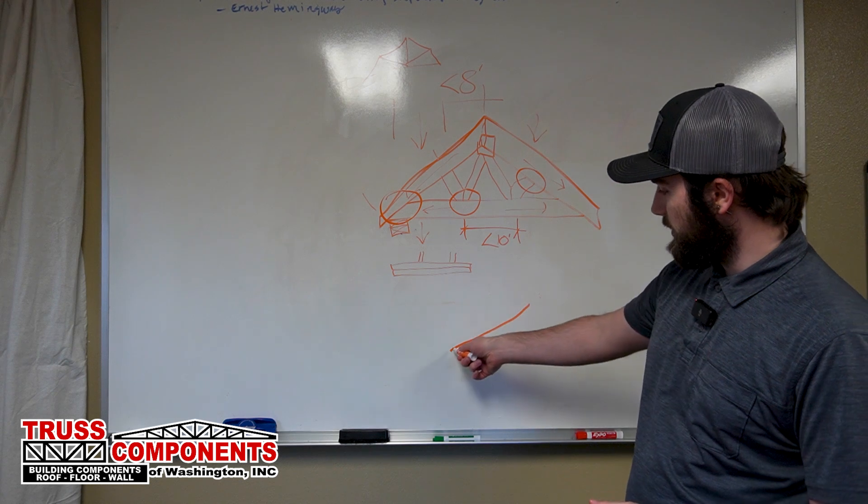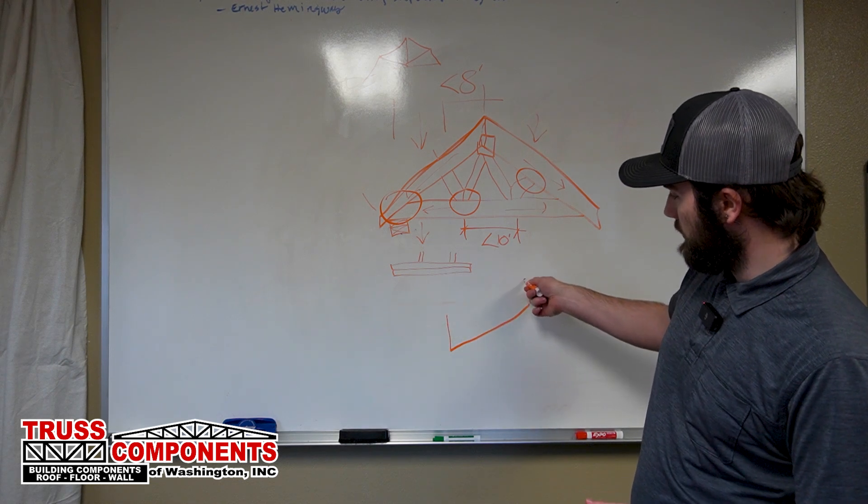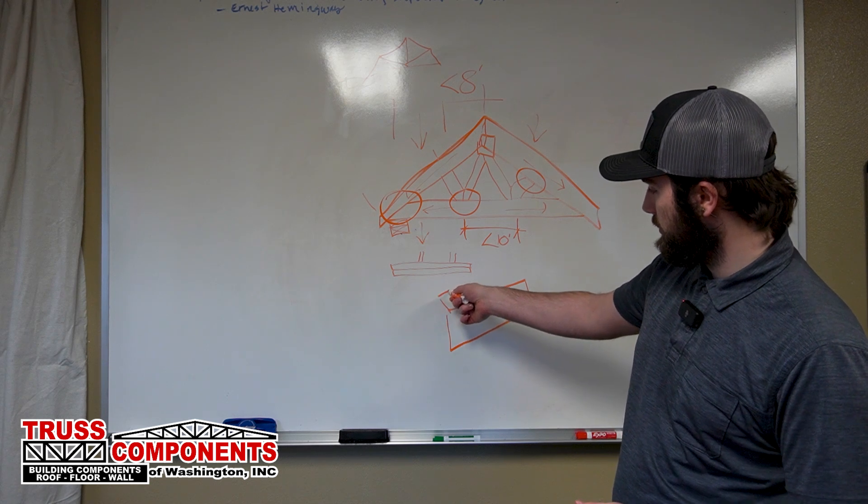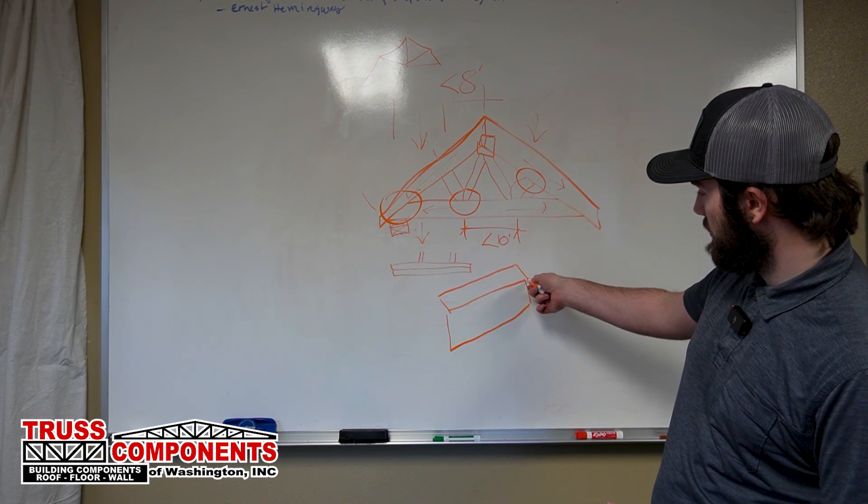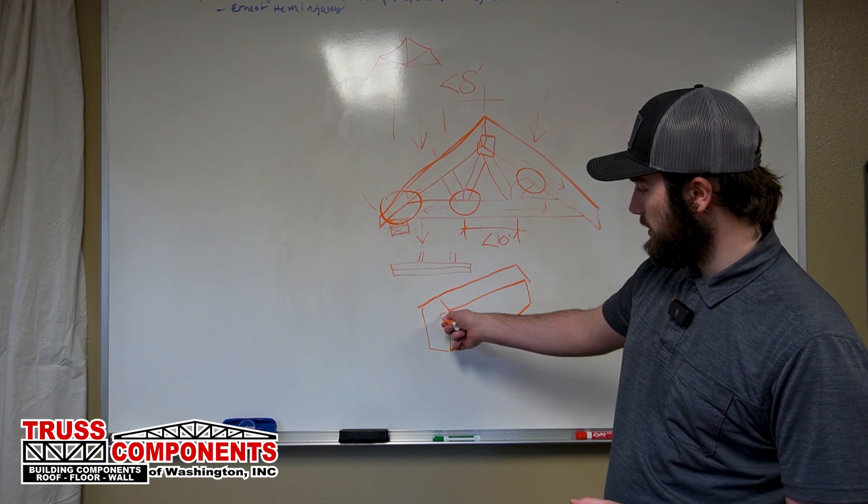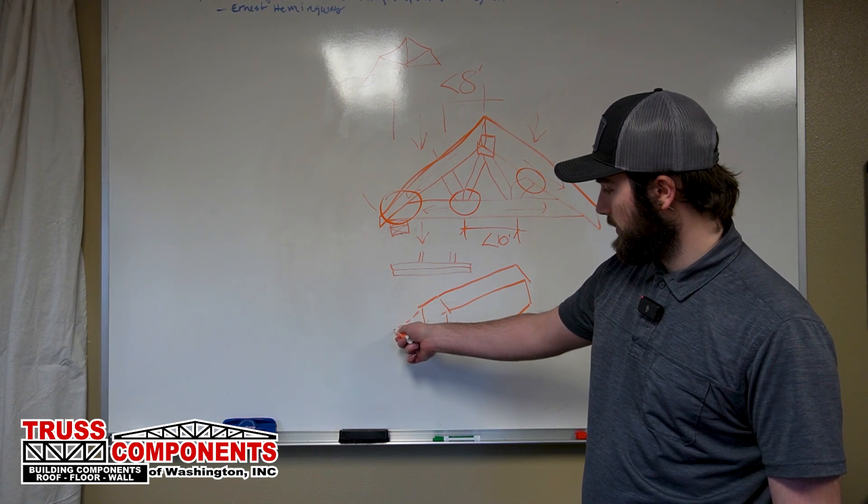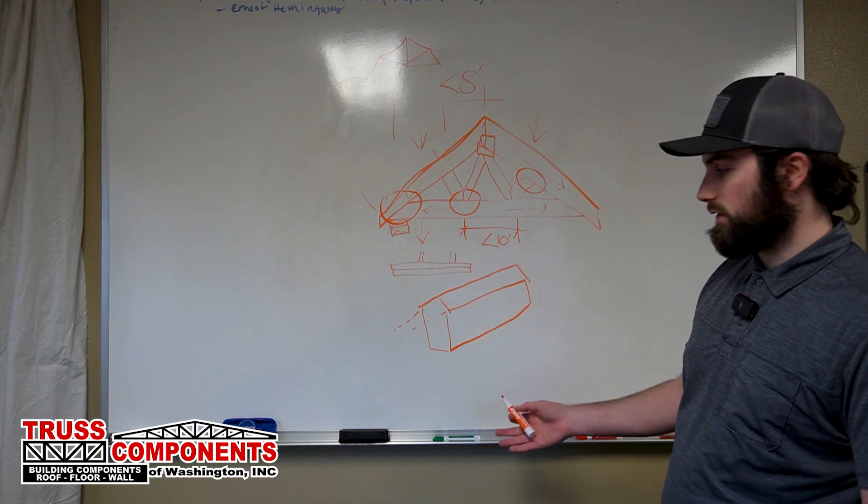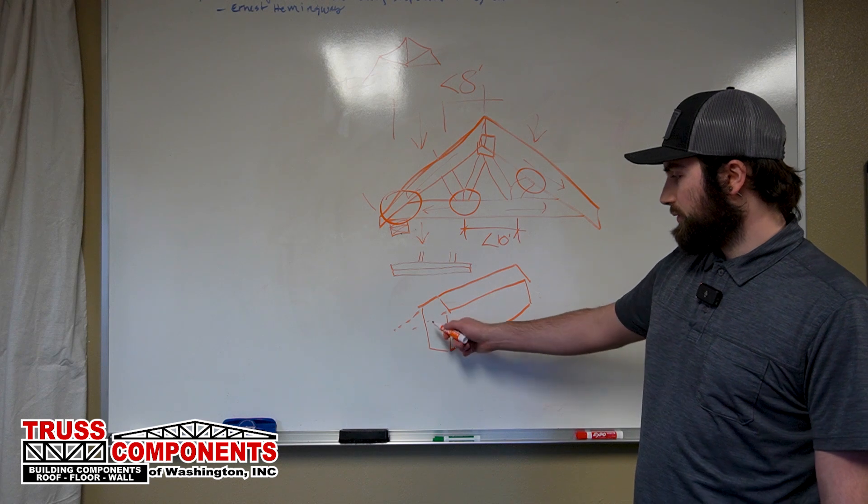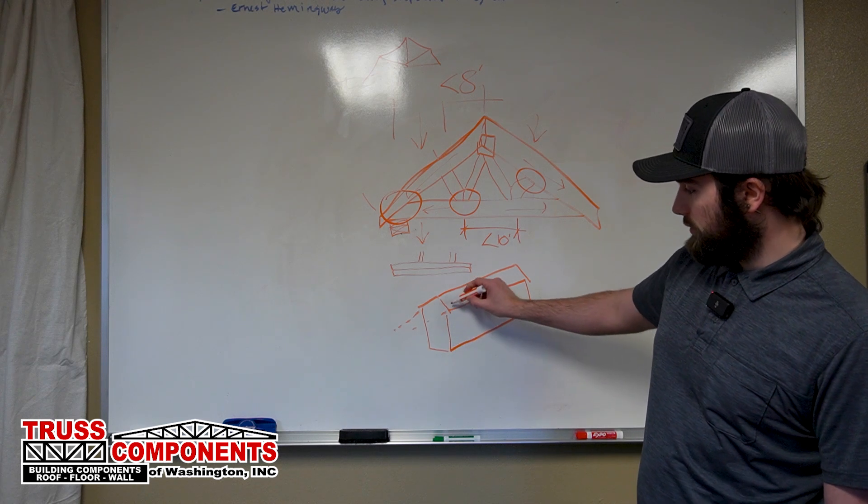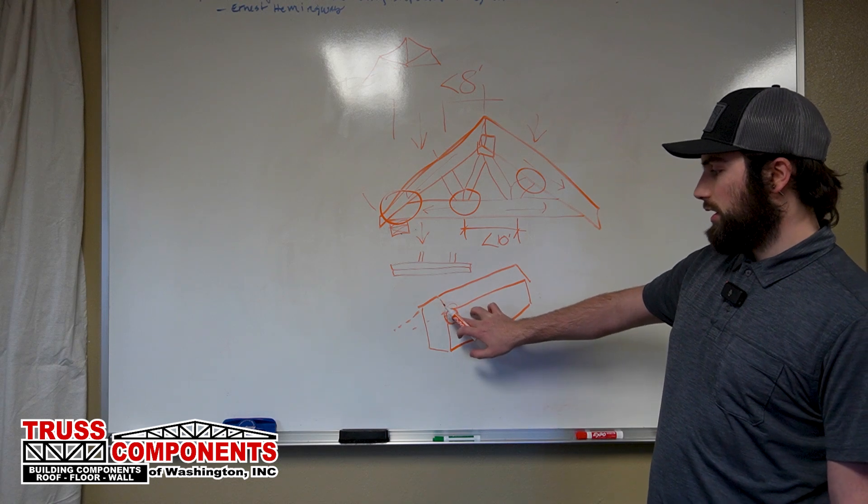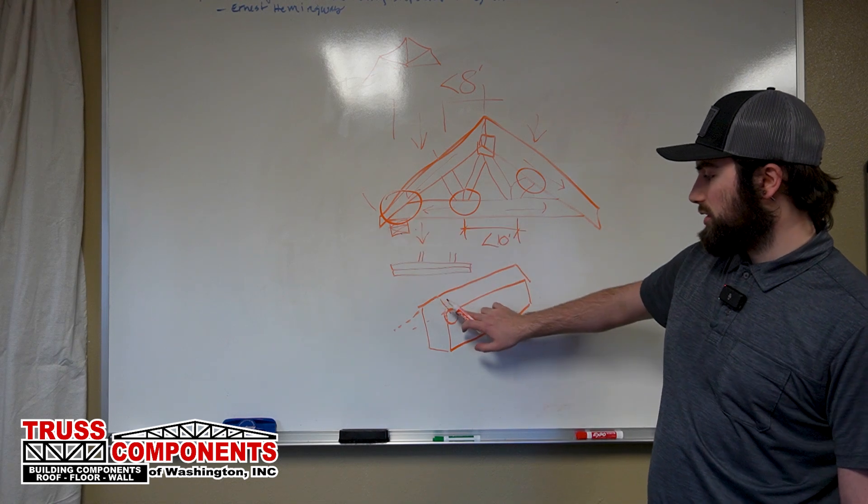So if we have our existing building here and that is the wall with the roof going like that, if we were to extend that building say 10 feet, somebody wants to add another bathroom off of their living room here, we would have to take the existing framing there and make sure that our heel matches that same height.